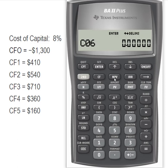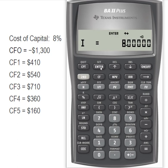Remember that the formula requires the net present value of the cash flows, so I'm going to use my NPV key. The first thing it's going to prompt you for is I, which is always your cost of capital. In this case it's 8%, so I'm going to enter that and now hit my down arrow. It's saying Compute NPV, so I'm going to use the Compute key. The net present value of those cash flows is $479.72.